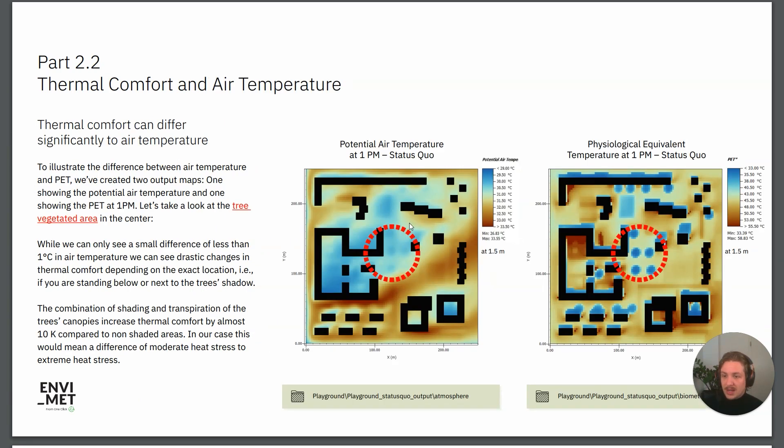Then we give you an example where we are comparing the potential air temperature with a thermal comfort index such as the physiological equivalent temperature. Here we can see the differences and why it is important to have a look at not only air temperature but also these thermal comfort indices.